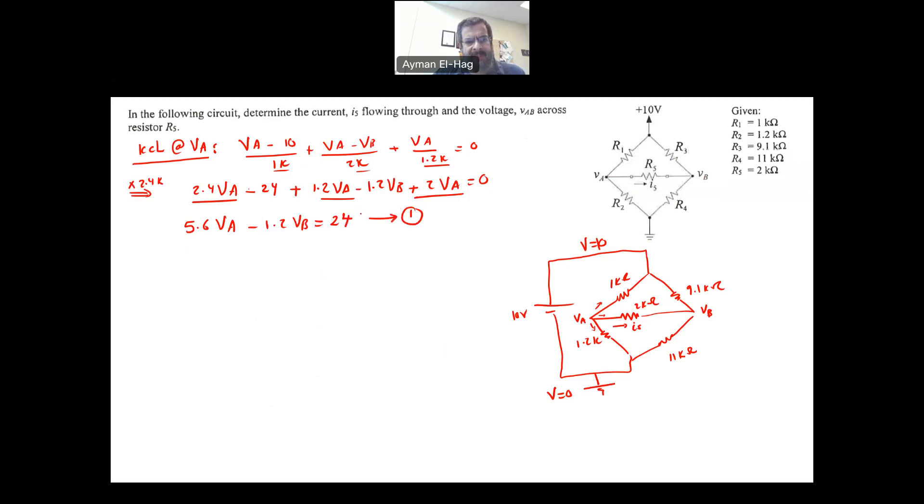And we will apply KCL at VB. Again, I will assume all the currents are leaving. It doesn't matter the current direction. You can assume any current direction as far as you are maintaining the KCL rule, which is summation of currents into the node equal to the currents leaving the node.